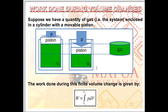Work done during volume changes: suppose we have a quantity of gas as our system, enclosed in a cylinder with a movable piston. We apply pressure on the piston, compressing the gas from initial volume V1 to final volume V2. The piston moves from its initial position to its final position, resulting in a volume change in our system.